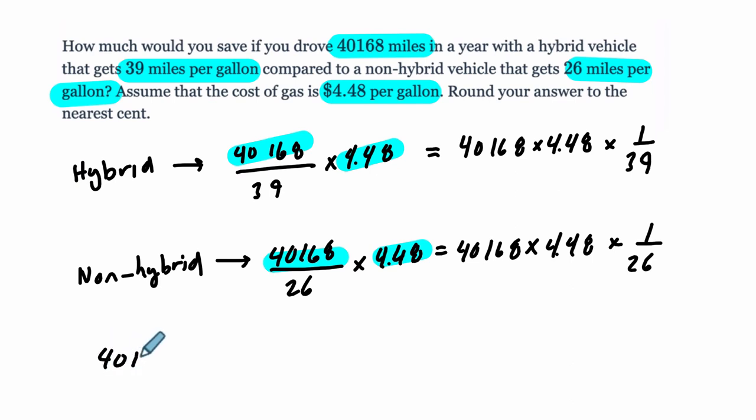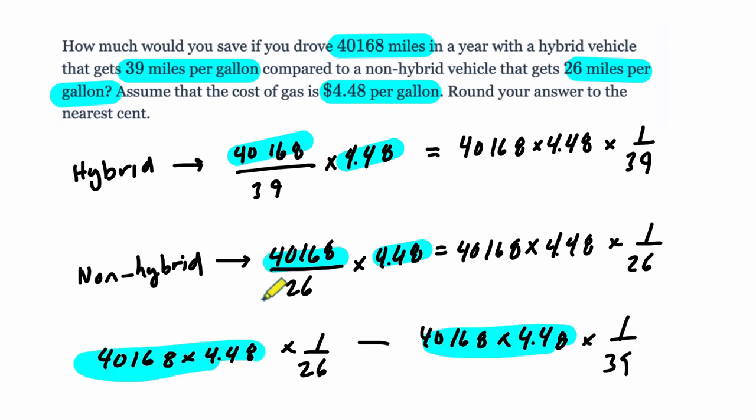And we're subtracting these things in this order. Non-hybrid first times 4.48 times, bear with me, 1 over 26 minus the hybrid. Same numbers. This is where our distributive property comes into play. We can factor here times 1 over 39. And these are two terms. This is one term. This is the other. They're called terms. They both have this number in it.